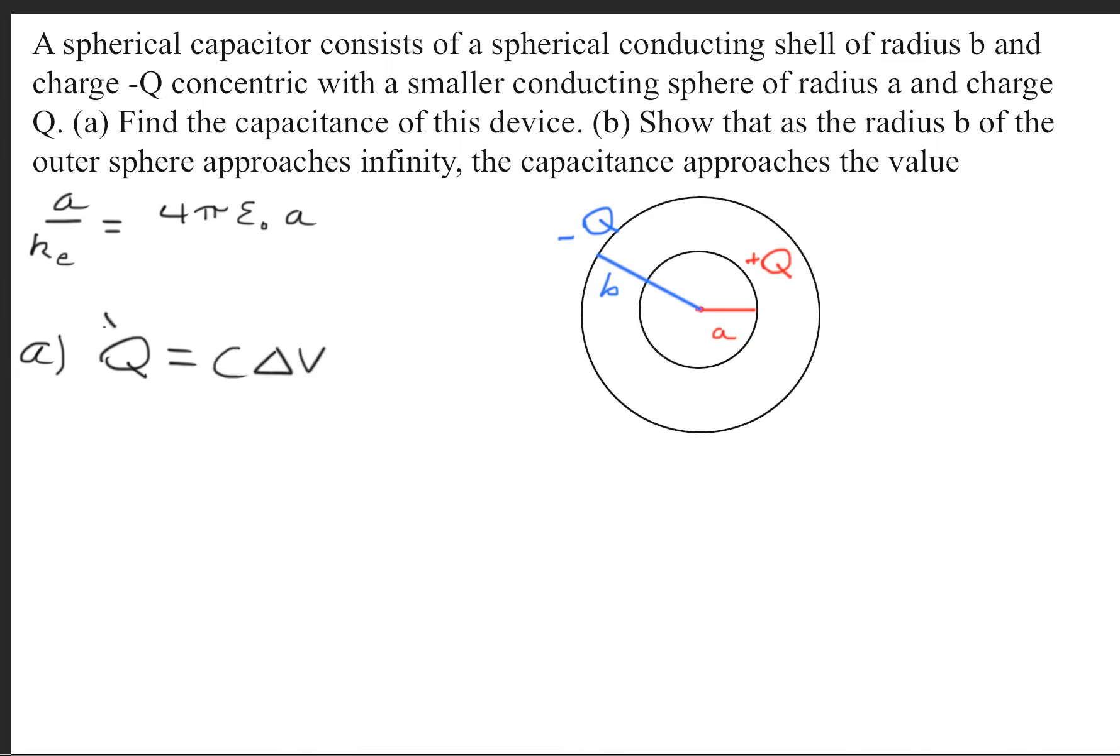We need to know the charge and the potential difference. Looking at this diagram right here, we have this inner circle with a +Q charge and this outer circle with a -Q charge.